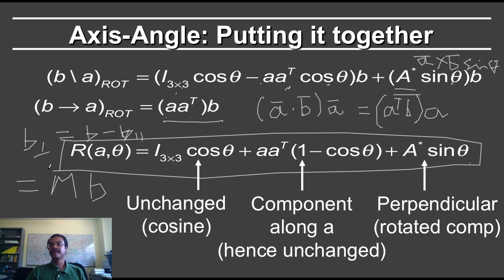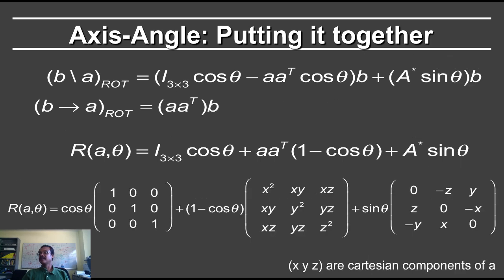If you didn't fully follow the derivation, that's okay — in homework 1 you only need the final formula. I hope I've given you some intuition for why this fairly complicated formula comes about. If x, y, and z are the Cartesian components of vector A, then the rotation matrix can be written as a quadratic form in components of vector A. This is often known as Rodrigues' rotation formula.